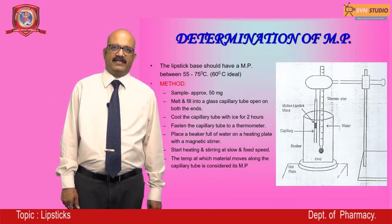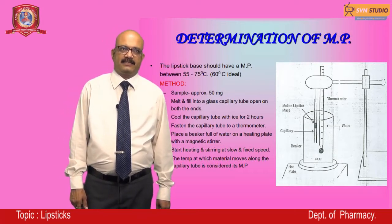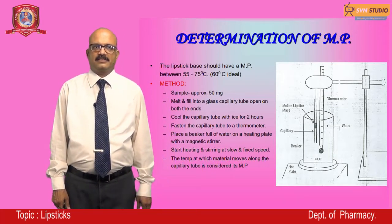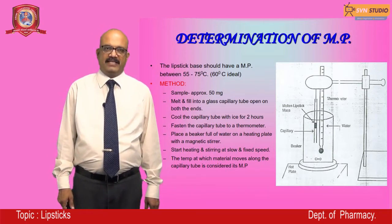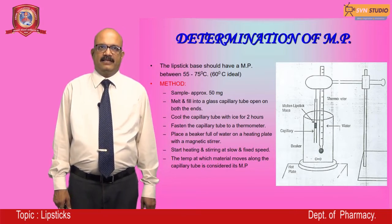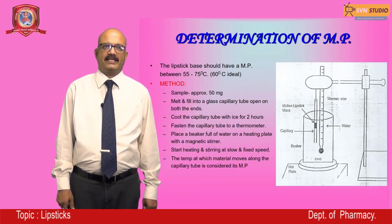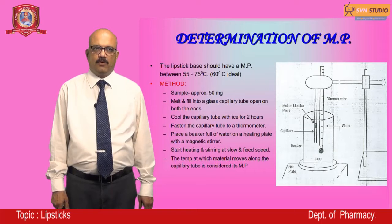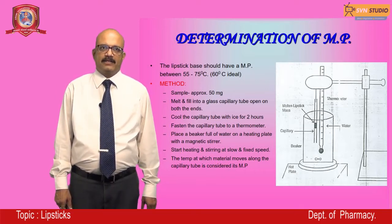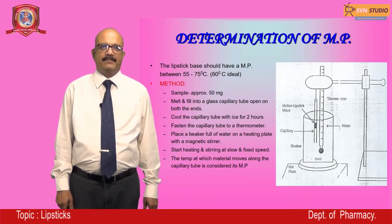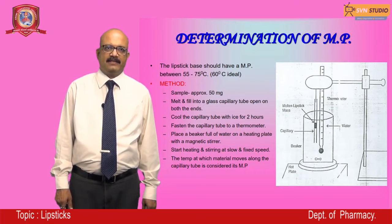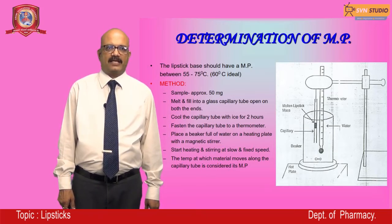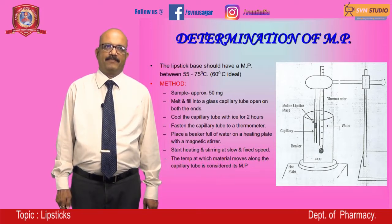The lipstick base should have a melting point between 55 to 75 degrees centigrade. The method involves taking about 50 milligrams of sample, melting it, and filling it into a glass capillary tube open on both ends. The capillary tube is cooled with ice for two hours, fastened to a thermometer, then placed in a beaker of water on a heating plate with a magnetic stirrer. Heating and stirring begin at a slow, fixed speed. The temperature at which the material moves along the capillary tube is considered its melting point.